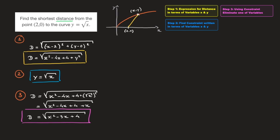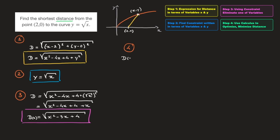We now have an expression for the quantity we're trying to minimize written in terms of one variable only, x. We could write this as d of x equals the square root of x squared minus 3x plus 4. Now I move on to the fourth and final step, where I'm actually going to find the minimum value of this function using calculus.